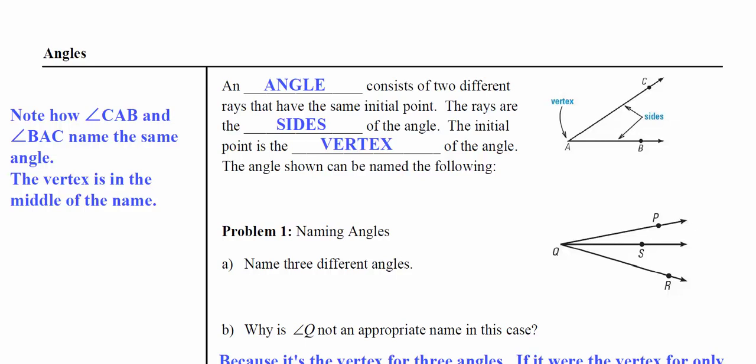The rays are the sides of the angle, and of particular interest is the vertex of the angle. This is where the two initial points meet. This angle in particular we could name angle - and that's the symbol for angle - CAB.